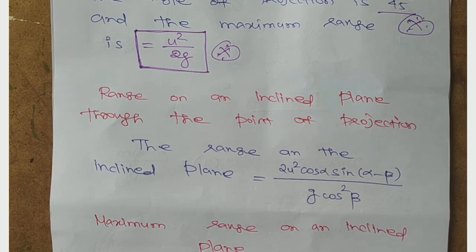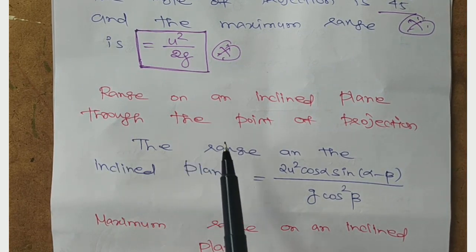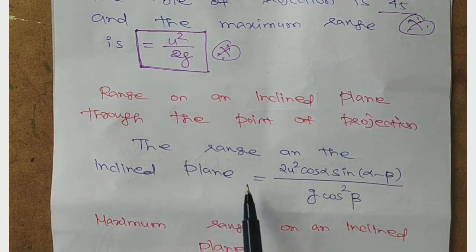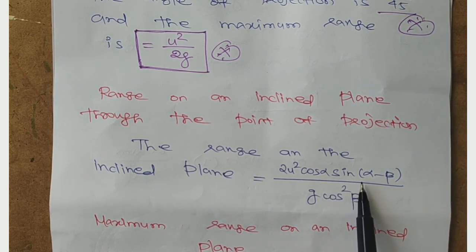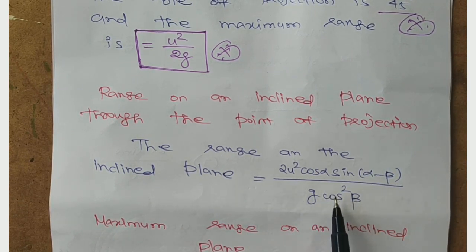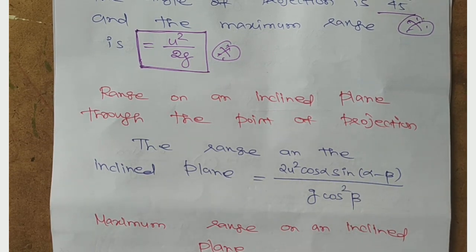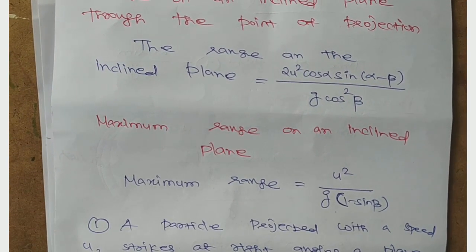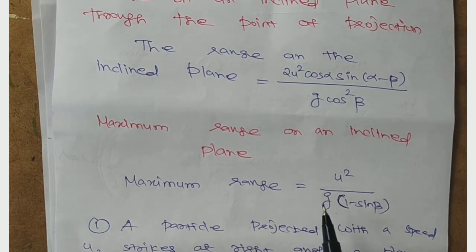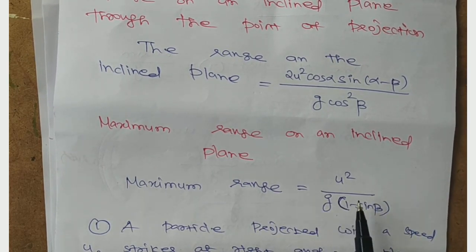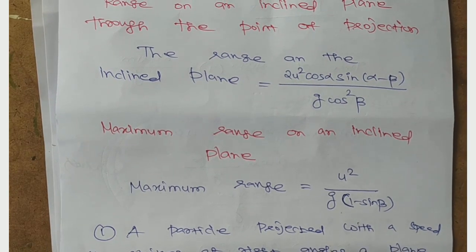The range on the inclined plane through the point of projection is 2u² cos α sin(α - β) divided by g cos² β. This is the derivation. The maximum range on inclined plane is u²/g into (1 - sin β).